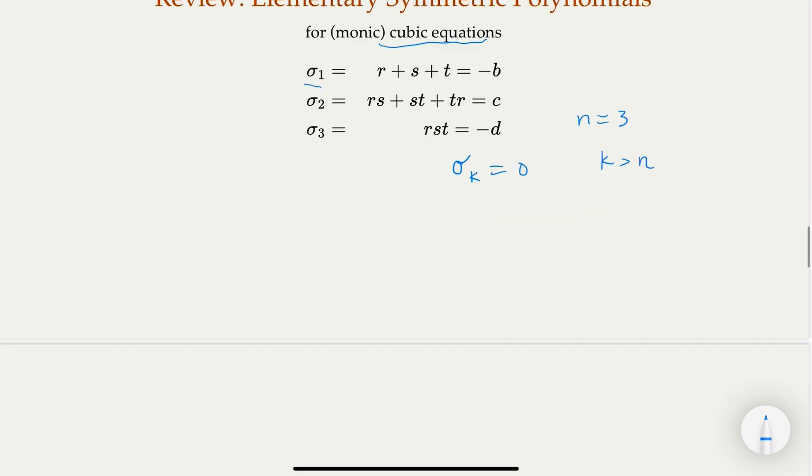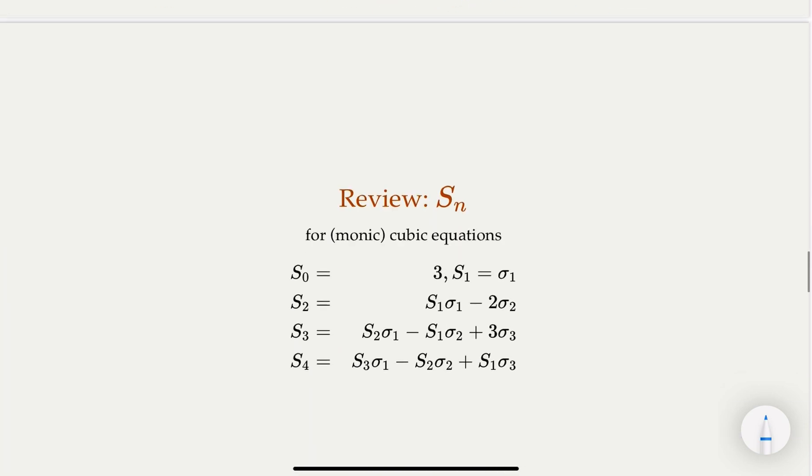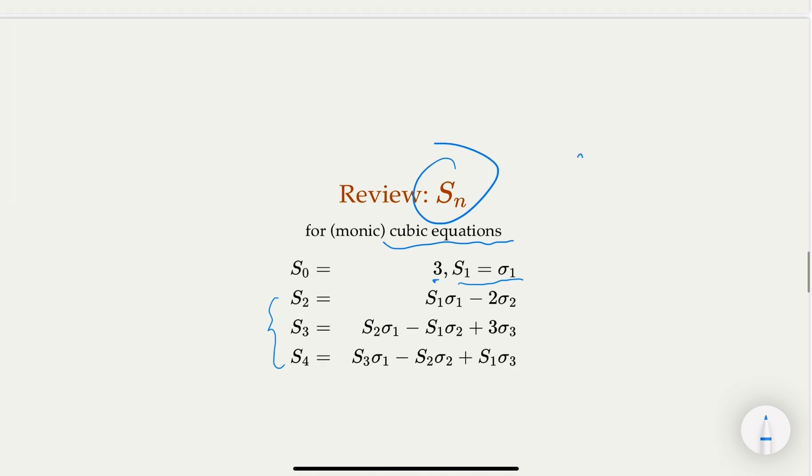Another thing we learned is S_k. For cubic equations, we know that S_0 equals 3, S_1 equals sigma 1 by definition. S_2, there is a recurrence relationship. And here we would like to express everything in terms of sigma 1, sigma 2, and sigma 3. So here S_1, you're going to plug in sigma 1. This becomes sigma 1 squared minus 2 sigma 2.